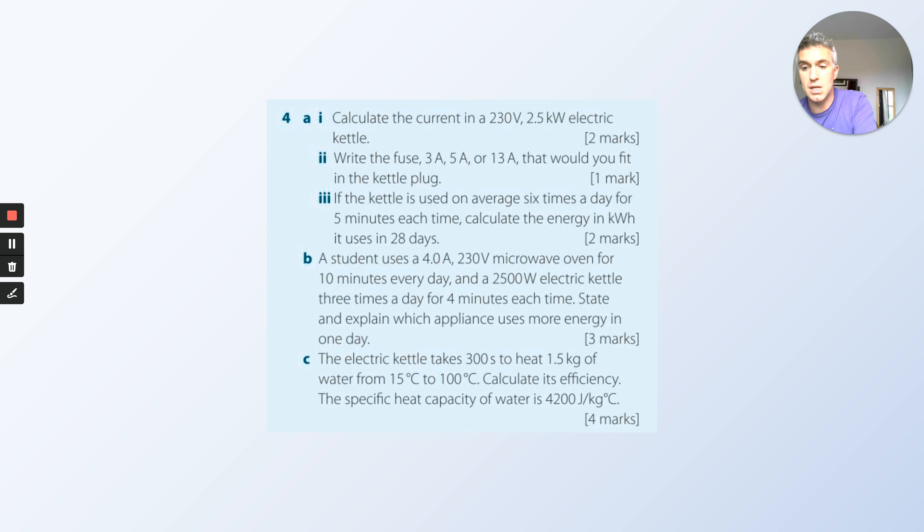So work out the energy. This first one, you can use these numbers to work out power, P equals I times V, and also you know power is energy over time, so you can use those two equations. This one, you don't even need to work out the power because it gives you the power. Remember, time should be in seconds, not in minutes. You have to convert.